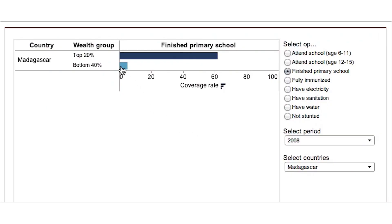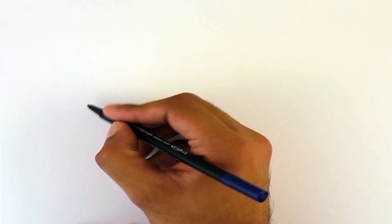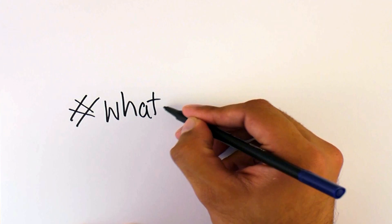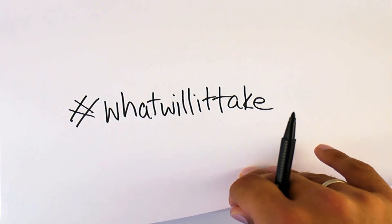For instance, only 5% of children in the poorest 40% of households in Madagascar have finished primary school. So what will it take to offer equal opportunities to children born into different circumstances across the world?